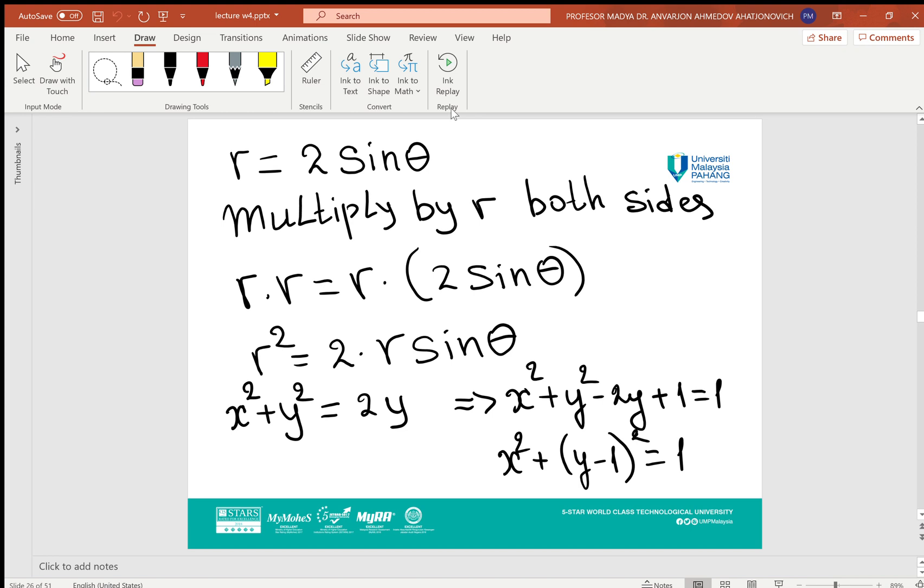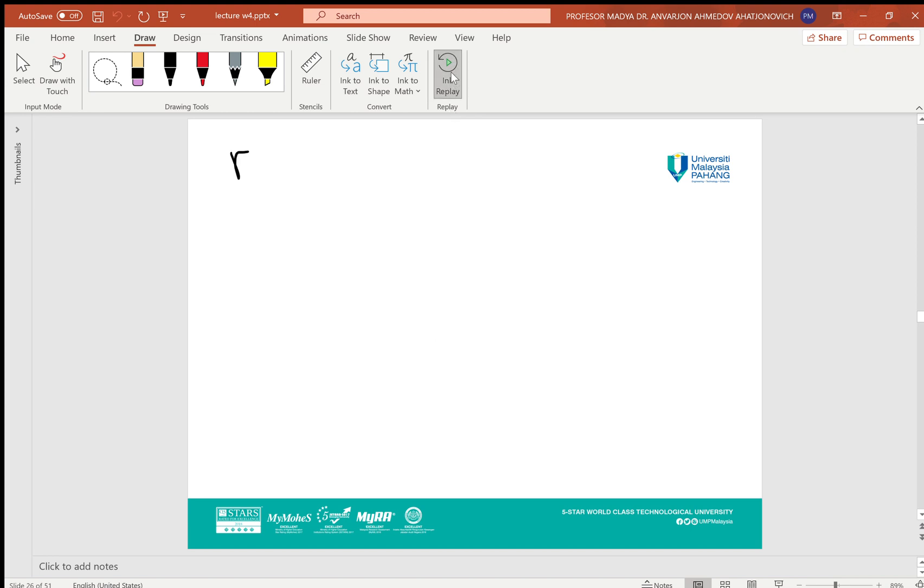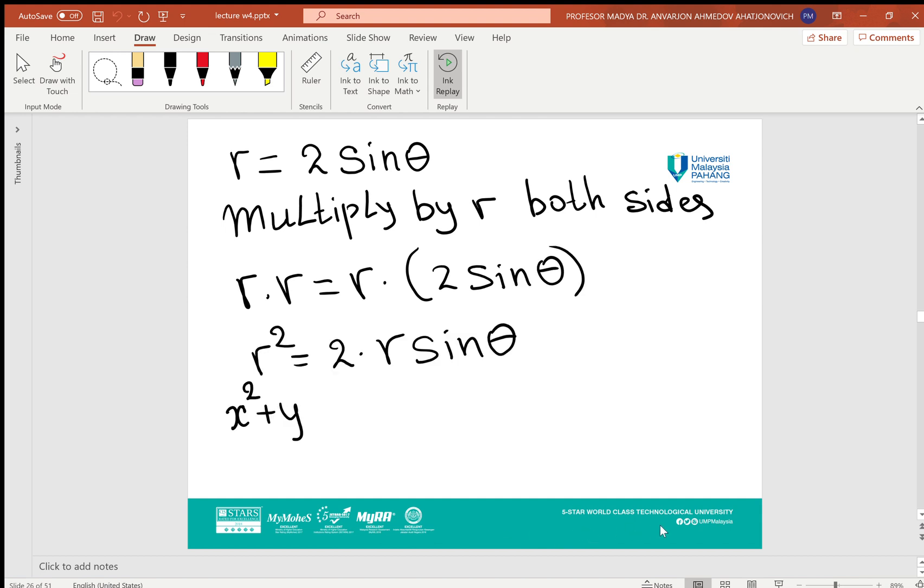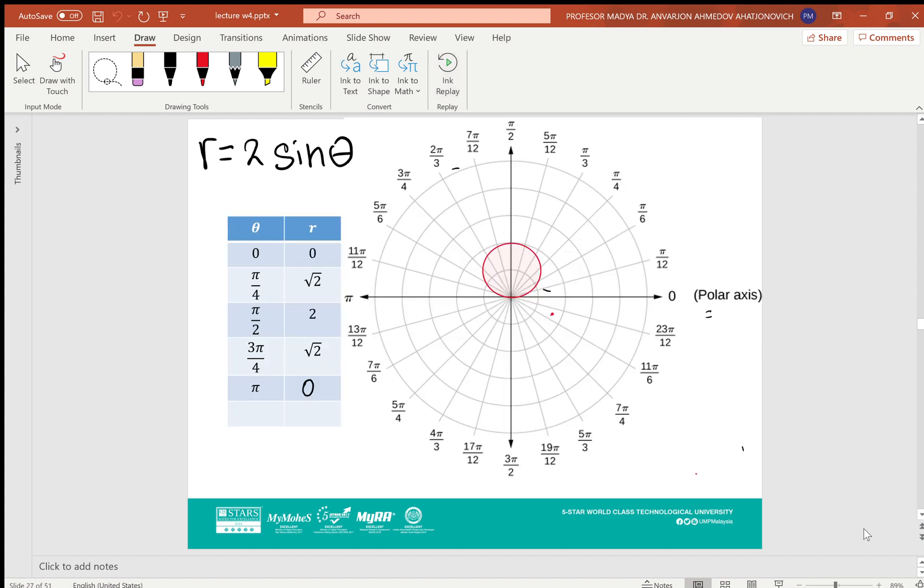Next, r = 2sinθ. We already did this—how to transfer to rectangular coordinates by multiplying by r. I'll quickly show this calculation. We multiply by r, then apply the polar axis formula to get a circle of radius 1 centered at (0,1). But here we don't apply that formula—we just use the table method.